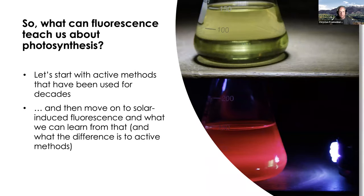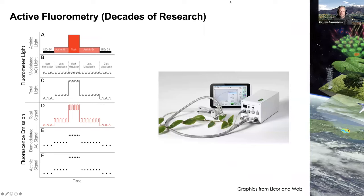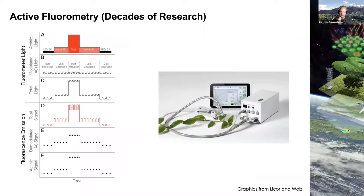After all these complicating factors, what can fluorescence really teach us about photosynthesis? Let's start with active methods used for decades. Active fluorometry — PAM fluorometry, pulse amplitude modulated fluorescence — is a powerful yet simple method. It uses a modulating light beam that illuminates the leaf on and off at high frequency, an actinic light source to mimic the sun, and optionally a saturating flash about four to five times brighter than midday California sunlight.